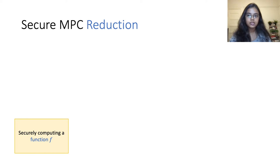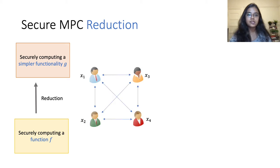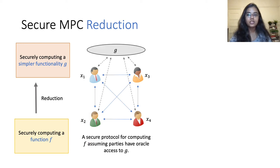Since its inception, the design of MPC protocols has quite heavily relied on the notion of secure reductions. We say that a problem of securely computing a function f reduces to the task of computing a simpler function g if there exists an interactive protocol for computing f where the parties have access to an oracle implementing the function g.